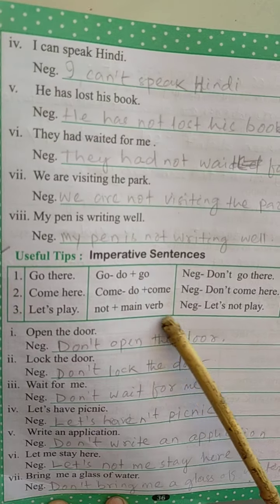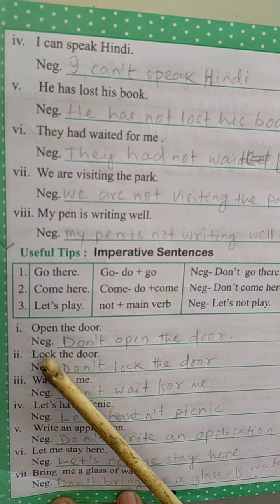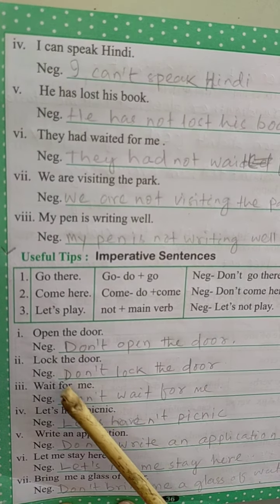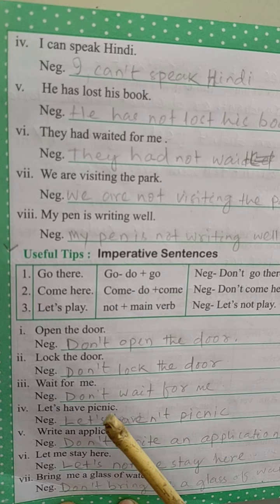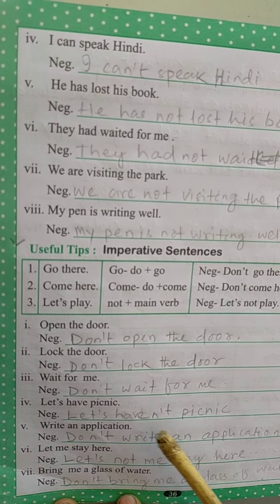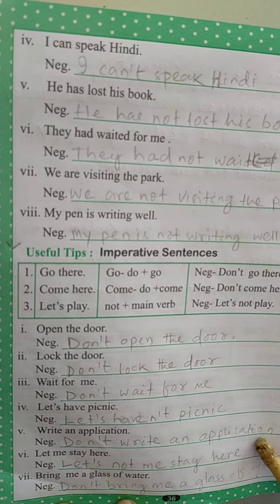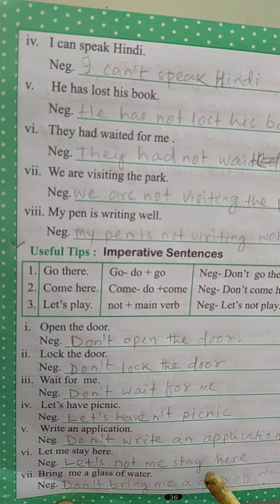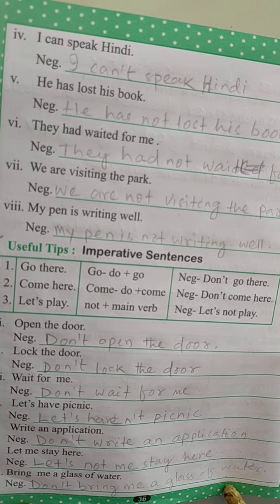The imperative sentence has to be made into a negative sentence. Open the door — negative will be 'don't open the door'. Lock the door — 'don't lock the door'. Wait for me — 'don't wait for me'. Let's have a picnic — 'let's not have a picnic'. Write an application — 'don't write an application'. Let me stay here — 'let's not me stay here'. Bring me a glass of water — 'don't bring me a glass of water'.